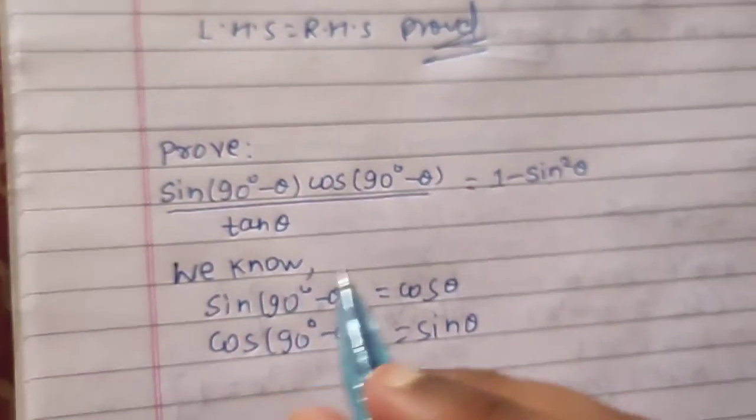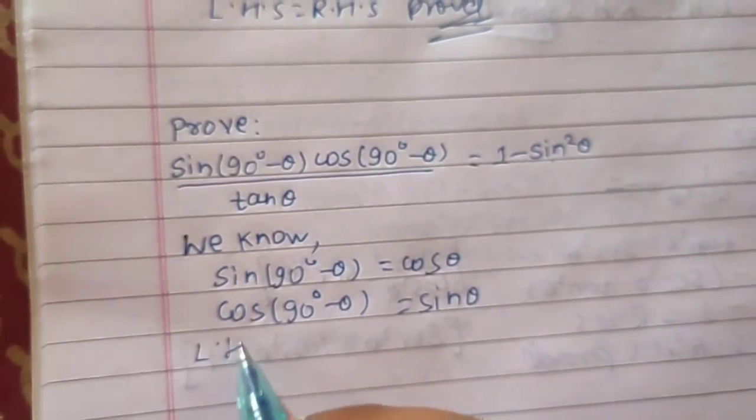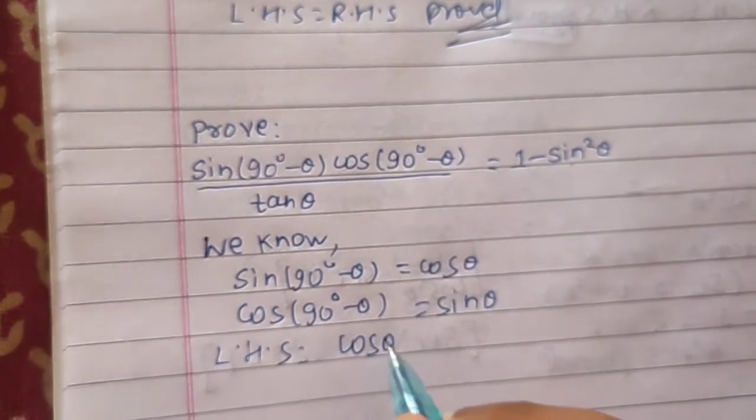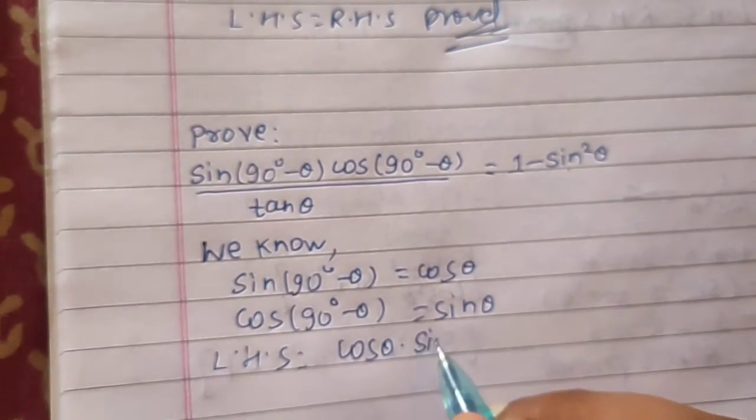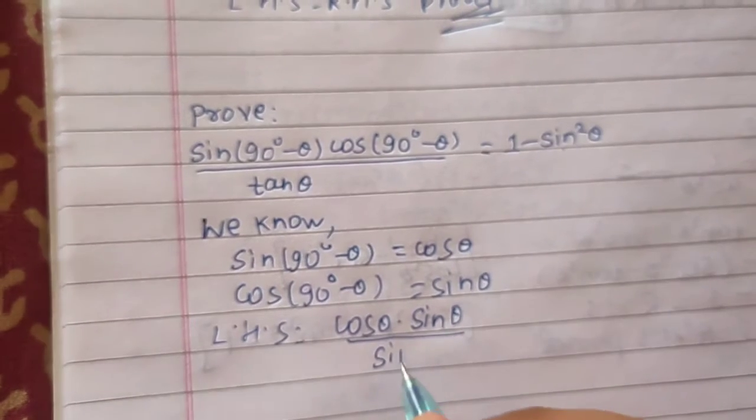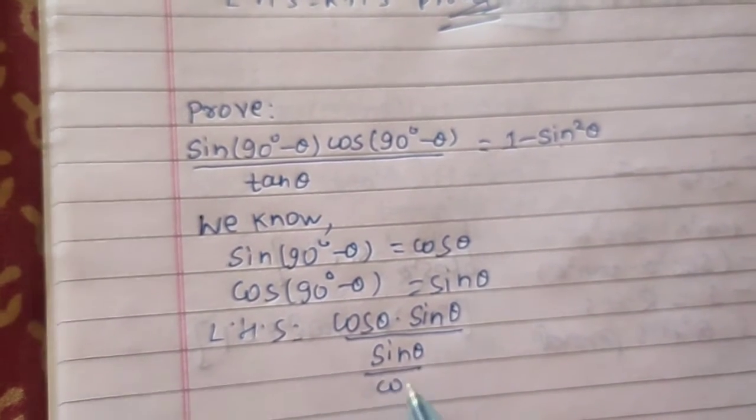Now we can use these results and write our LHS as: sin(90° - θ) = cos θ times sin θ divided by tan θ, which can be written as sin θ / cos θ.